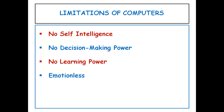Another limitation of a computer is no decision-making power — computers cannot take any decisions of their own and do only those tasks which are already instructed to them. Another limitation is no learning power — once you give instructions to a computer on how to perform a task, if you do not give it instructions the next time, it cannot perform that task. For example, when you are taught how to solve a problem, if the same type of problem is given to you, you can solve it — but computers cannot. Computers are also emotionless; they do not have emotions, likes, dislikes, or feelings. They are simply machines which work as per instructions given to them.